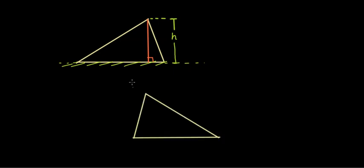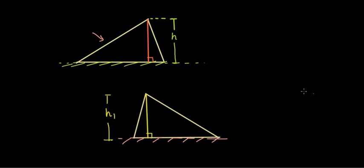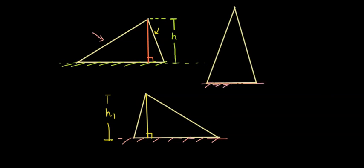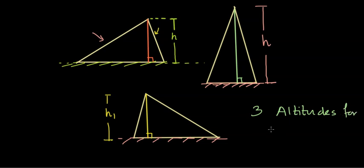Now what if we rotated this triangle? If we rotated this triangle keeping a different side as the base, the height of the triangle will change. We drop a perpendicular from the opposite vertex to the base, and that is the height of the triangle — this angle is 90 degrees, labeled h1. Rotating again to a third orientation, the altitude length is much larger in this case. So we can draw three altitudes for a given triangle and their lengths are different.